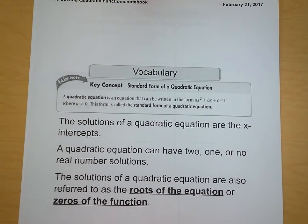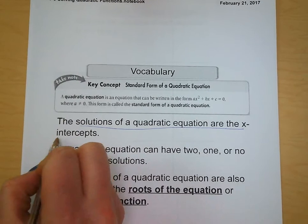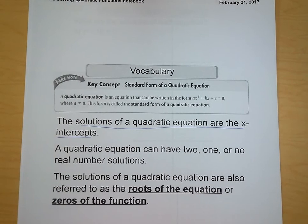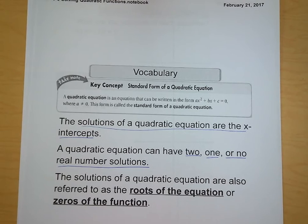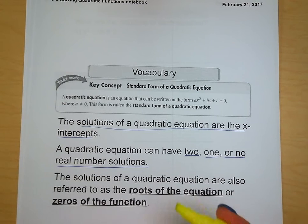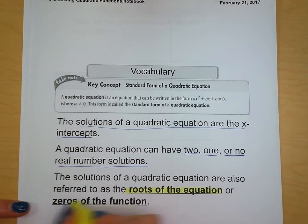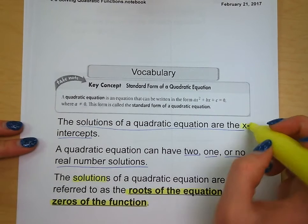The solutions of a quadratic equation are the x-intercepts — that is where they cross the x-axis. A quadratic equation can have two solutions, one solution, or no solutions, depending on where it is positioned on the graph. We use different words to refer to these solutions: the roots of the equation and the zeros of the function. Solution, roots, and zeros all mean the same thing — we are looking for the x-intercept.